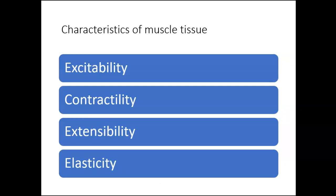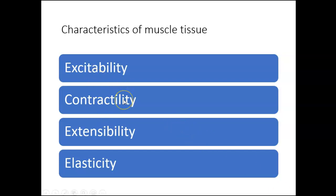Here are some of the characteristics of muscle tissues. They are excitable — skeletal muscle is able to generate action potentials, which are electrical impulses that travel down skeletal muscle cells. Muscle has the ability to contract or become shorter, and it has the ability to extend and become longer. And it is elastic, so it has a certain amount of flexibility.